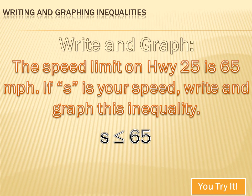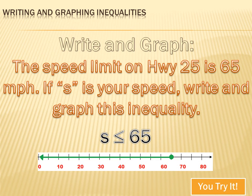If S is your speed, write and graph this inequality. S has to be less than or equal to the speed limit of 65 miles per hour. How would I graph that on a number line? The first thing I have to do is pinpoint that 65, because we know everything starts at the 65. I'm going to fill in the circle — not leave it open — because 65 is included in our solution set. Then I'm going to draw an arrow in the direction of all the solutions, all of which are less than 65.